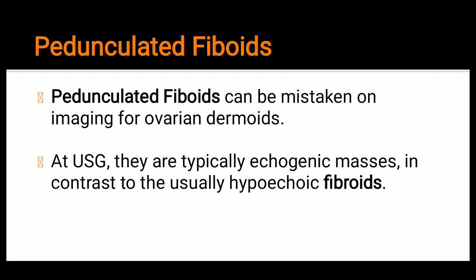Regarding pedunculated fibroids — patients may have pedunculated intrauterine fibroids. On ultrasounds which are not of good quality, you may see what appears to be increased endometrial thickness. But if we use a good quality ultrasound scanner, you can identify and diagnose pedunculated fibroids. They can be mistaken on imaging for ovarian dermoids because of the different types of shadows present. That is why pedunculated fibroids are usually missed for ovarian dermoids.